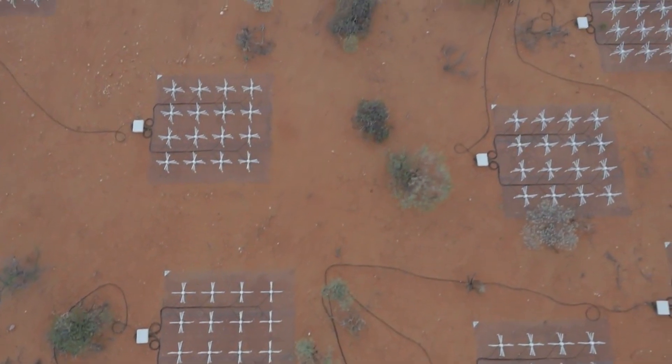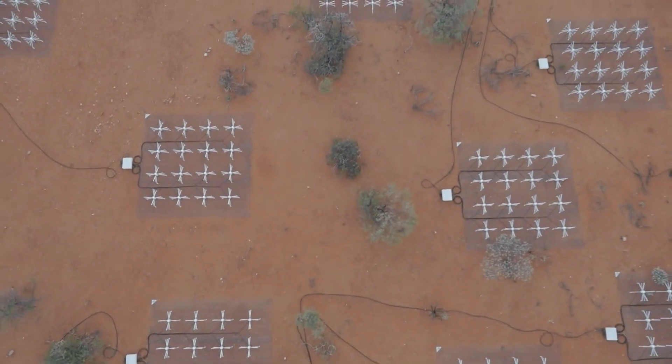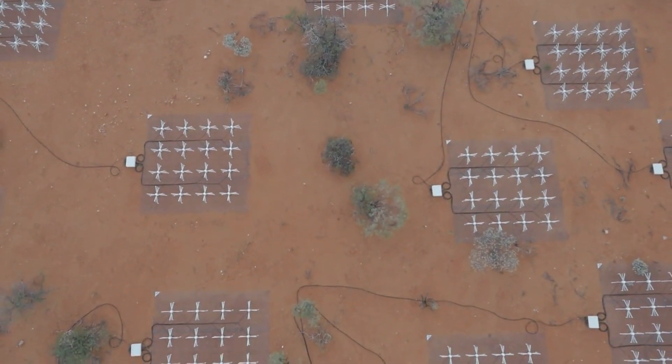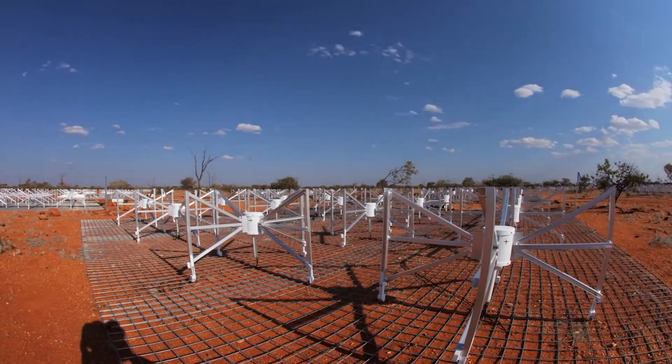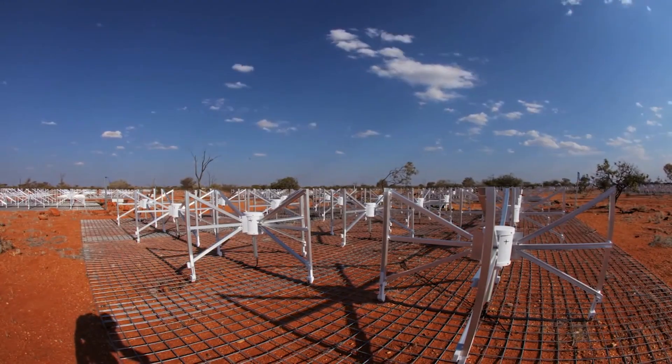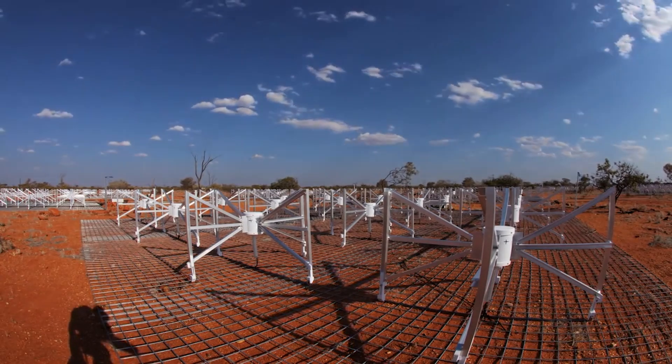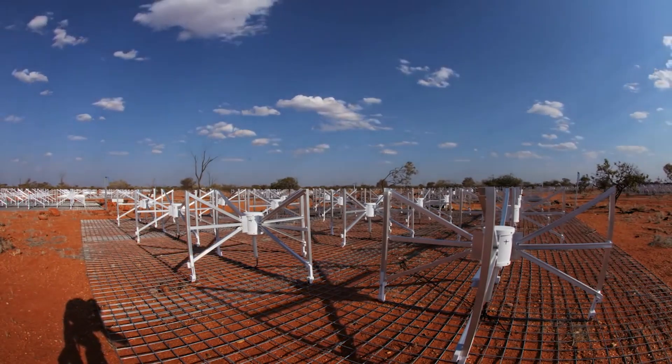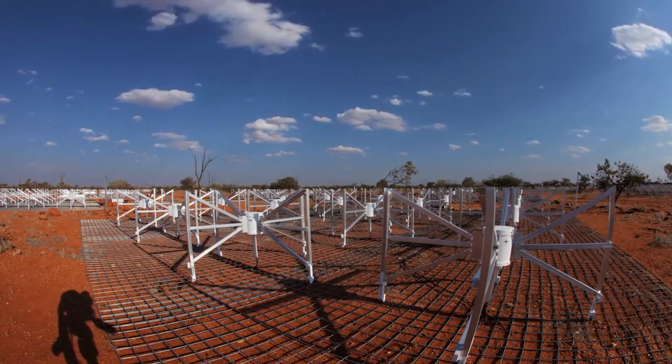The Murchison Widefield Array is located on the Murchison Radio Astronomy Observatory in Western Australia. The observatory is managed by CSIRO, Australia's National Science Agency, and was established with the support of the Australian and Western Australian governments.